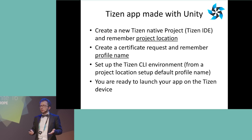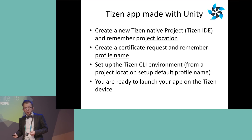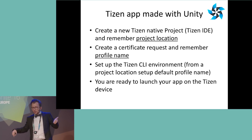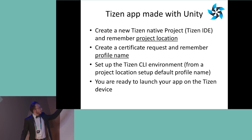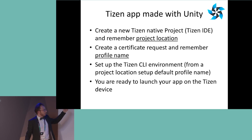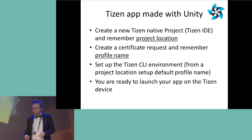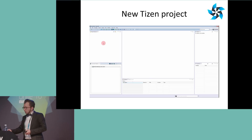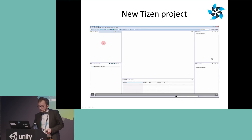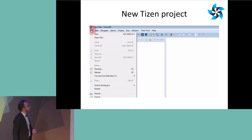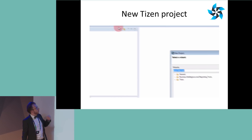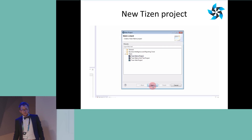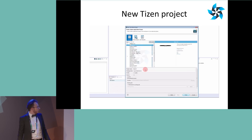How do you create an app using Unity and enable it for Tizen? You need to follow four steps: creating a project in our IDE, creating a certificate, creating a certificate request, then switching to Unity 3D to set up the environment, and you're ready to launch an app on Tizen. I don't trust demo gods, so my friend made some movies for you. This step is how to create a new Tizen project — it's straightforward. The native project is not visible at the beginning, so you need to click 'Other', select the Tizen native project, click Next, and click Finish.